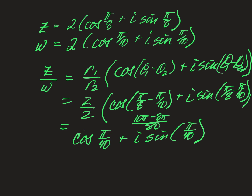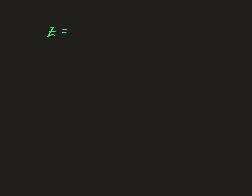And there you are — done with the division, no more steps needed. This becomes a plug-and-chug into formulas. What if we have z equals 2 plus 2i and w equals square root of 3 minus i, and we want to find z times w and z divided by w? Instead of doing it in rectangular form, we convert each to polar form.